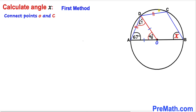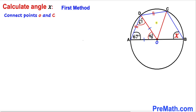Next, let's connect center O with vertex C. We can see that chord AD and chord CD are equal in length. Since the central angle for chord AD is 46 degrees, and the chords are equal, the central angle for chord CD must also be 46 degrees. Therefore angle COD is 46 degrees.